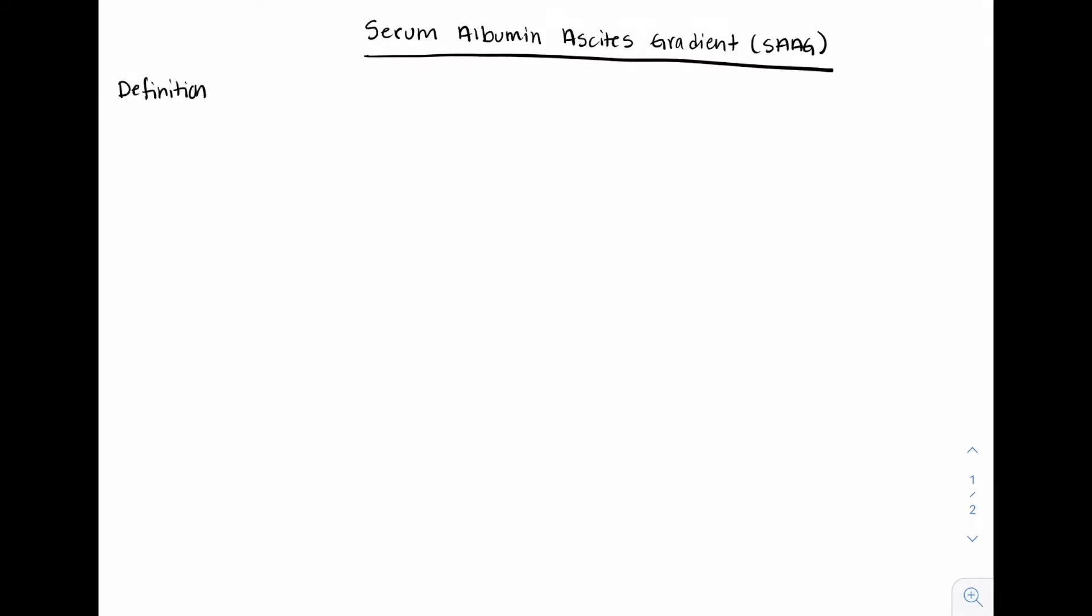How to calculate the serum ascites albumin gradient is in its name. It is the serum albumin minus the ascites albumin. This calculation can be used to determine the cause of ascites.